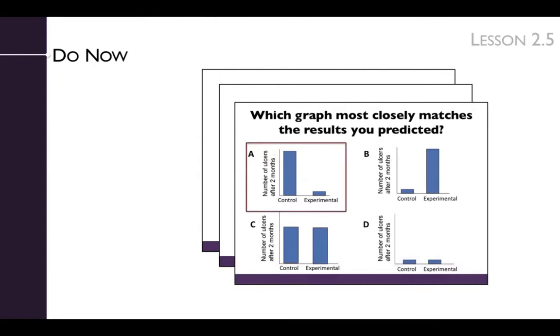Next, ask students to identify which graph most closely matches their predicted results. Depending on the class, this step might need extra time, and some teachers may choose to have the students design these experiments in class rather than as homework.